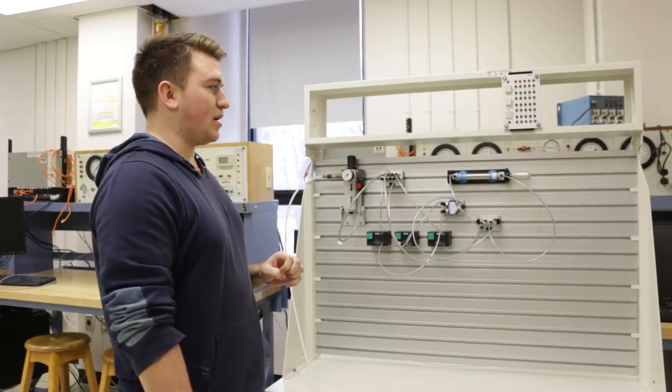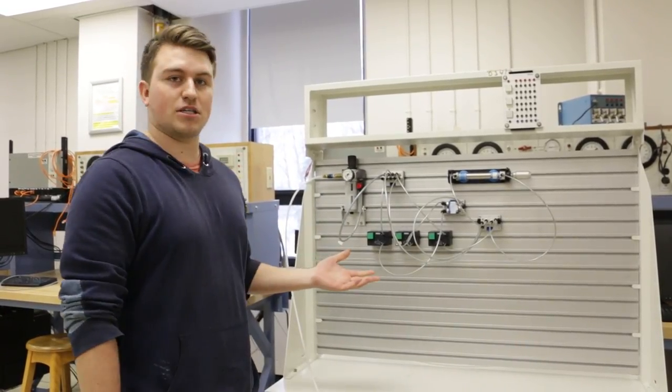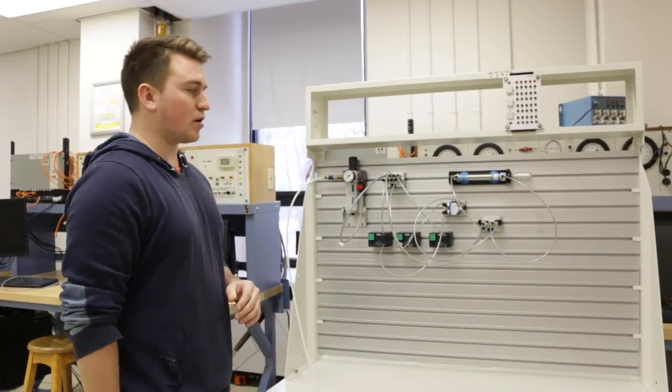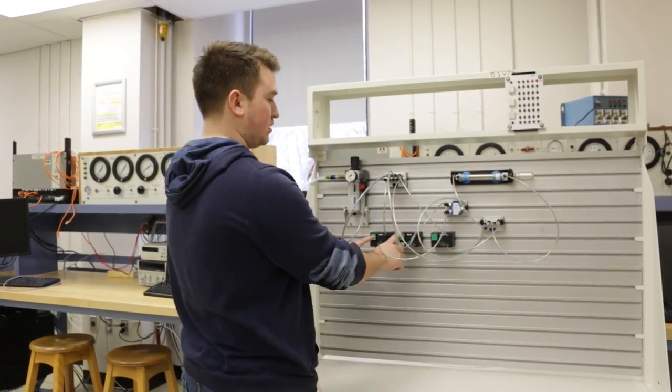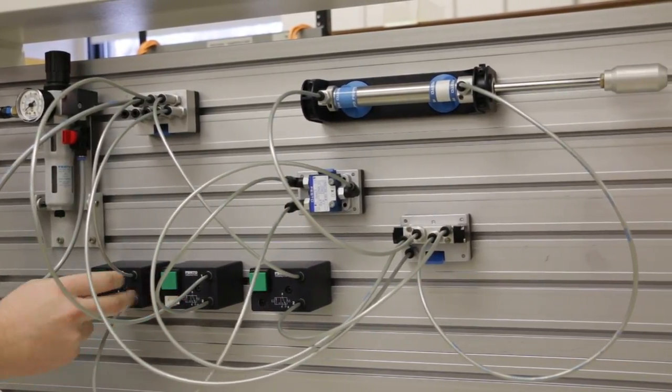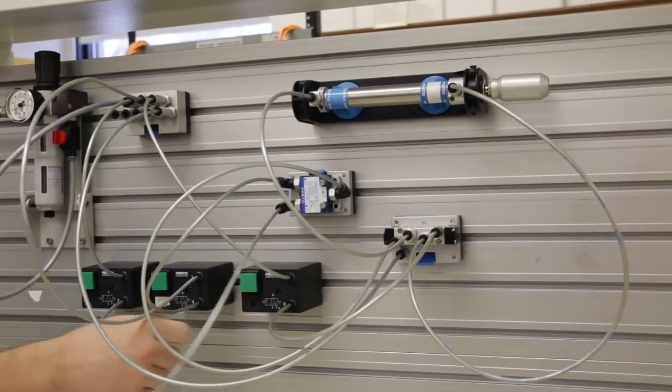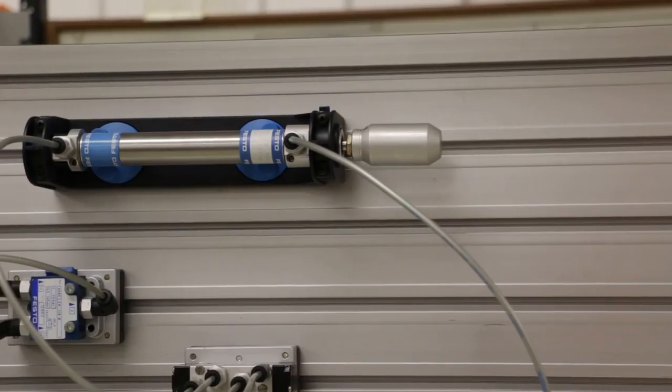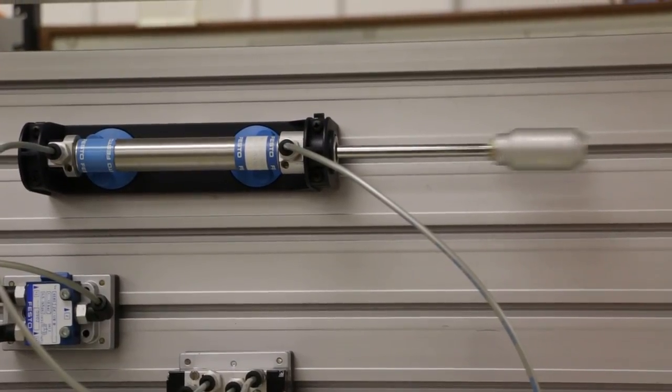In some of our labs we work with pneumatics and so one of our projects that we did today was an AND gate. Basically how an AND gate works is that you have two inputs and each of them needs to be triggered at the same time. So when they're pressed at the same time, the cylinder will activate and then to bring it back it's connected with a simple switch that brings it back.